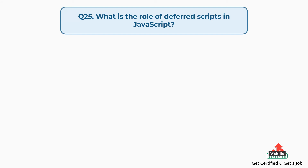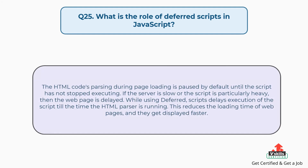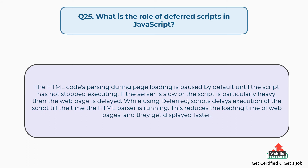Question number twenty-five: what is the role of deferred scripts in JavaScript? The HTML code's parsing during page loading is paused by default until the script has not stopped executing. If the server is slow or the script is particularly heavy, the web page is delayed. While using deferred, scripts delay execution until the time the HTML parser is running. This reduces the loading time of web pages and they get displayed faster.